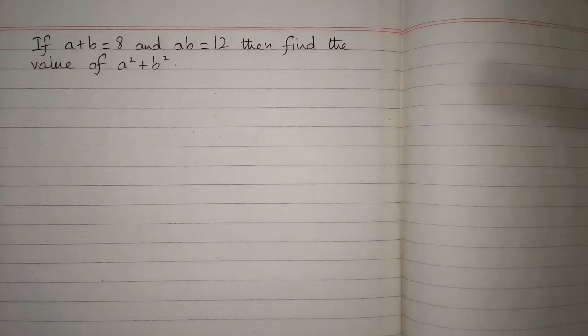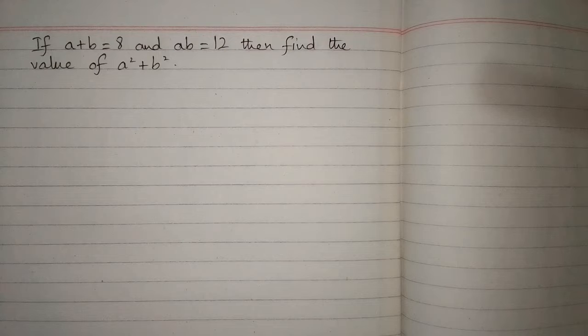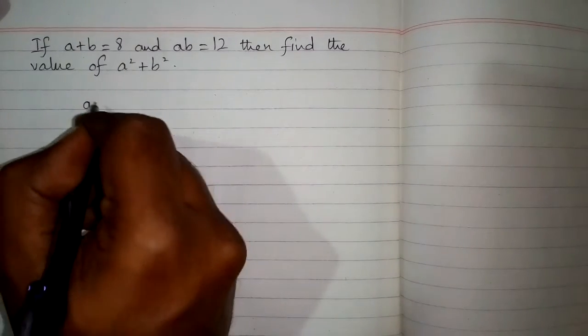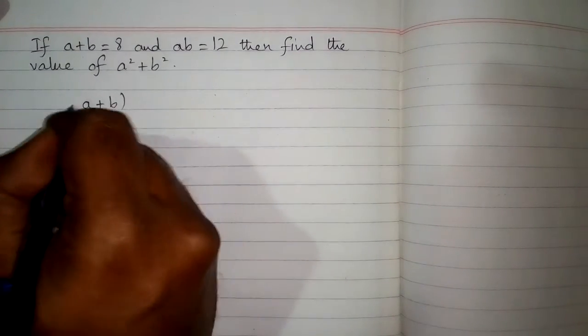If a+b is equal to 8 and ab is equal to 12, find the value of a²+b². We can solve this problem by using an algebraic identity: (a+b)² equals a²+2ab+b².